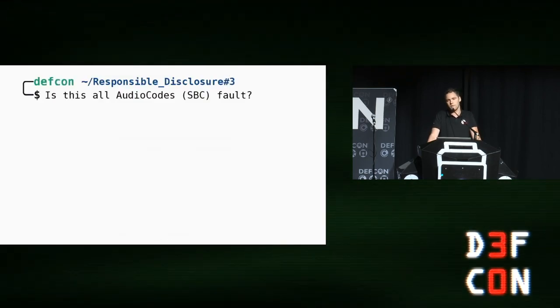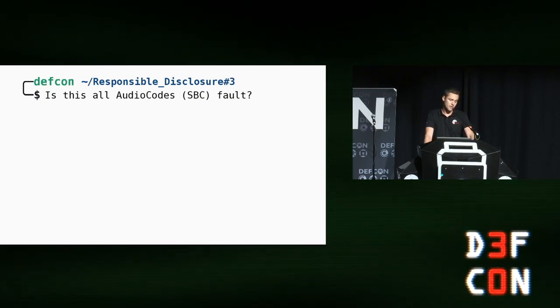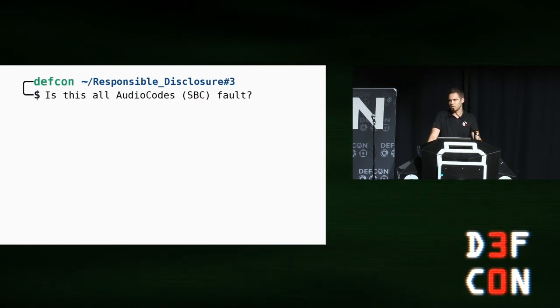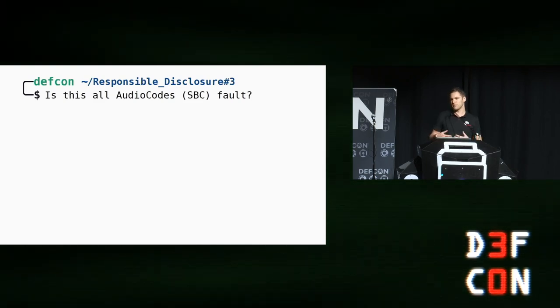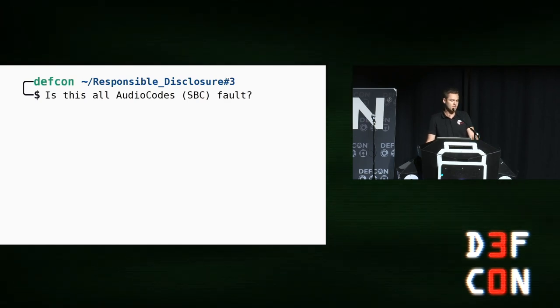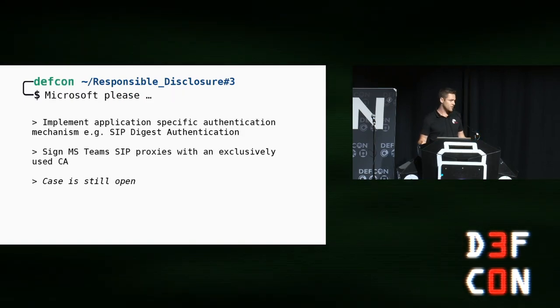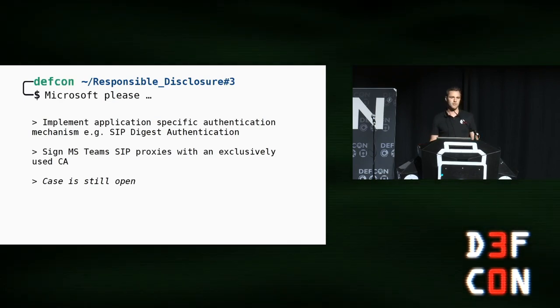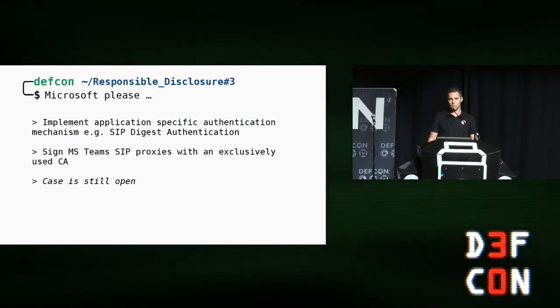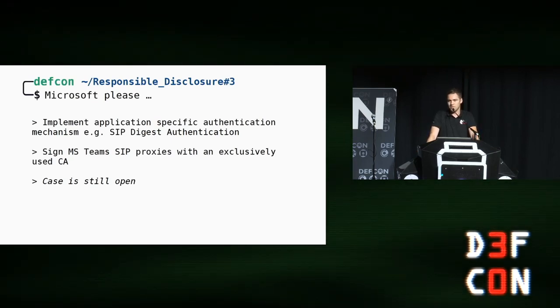At this point, I asked myself: what's going on at the AudioCodes side? Why don't they just implement an appropriate authentication mechanism for Microsoft Teams direct routing? And this brings us to the question: is this all AudioCodes' or the SBC's fault? The short answer is no. This is just the story about the manufacturer who tries to secure this using the limited hardening measures provided by Microsoft. In general, the described problems affect all Microsoft Teams direct routing installations, and the AudioCodes SBC is just an example. I asked Microsoft to implement proper authentication mechanisms such as application-specific SIP digest authentication, which would allow defining a long password on both sides. In addition, signing the Microsoft Teams SIP proxies with a dedicated and exclusively used certificate authority would secure the mutual TLS authentication. But until now, the case is still open.